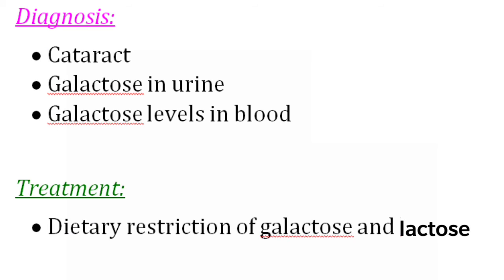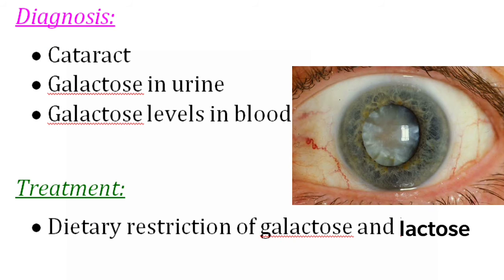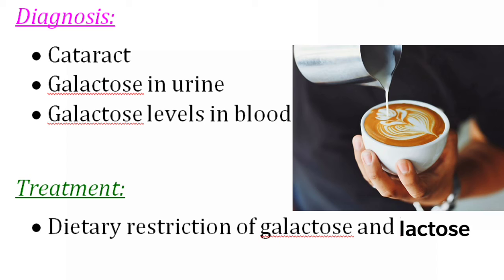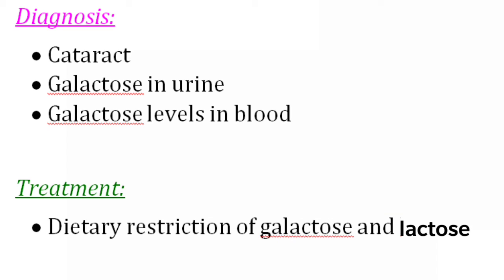Coming to diagnosis, clinical manifestations like cataract, galactose in the urine, and increased levels of galactose in the blood will help in the diagnosis. Treatment is by restricting the diet containing galactose and lactose — basically, you have to provide a galactose and lactose-free diet. If lactose is withdrawn from the diet, most of the symptoms will recede. But if mental retardation is established, it cannot be reversed even when galactose and lactose are withdrawn from the diet.